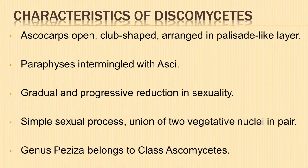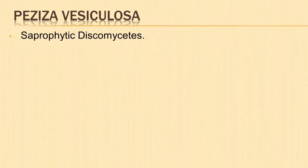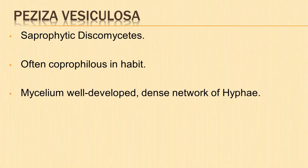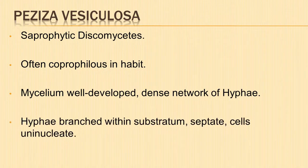Let us take up genus Peziza as an example and study about it in detail. Peziza vesiculosa is a saprophytic Discomycetes, generally growing in soils rich in organic matter or on decaying wood. They are often coprophilous in habit. The mycelium is well developed, showing a dense network of hyphae. The hyphae are branched extensively within the substratum and are septate. The cells are uninucleate.